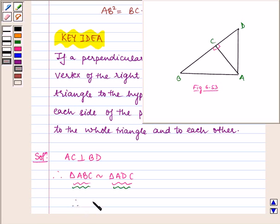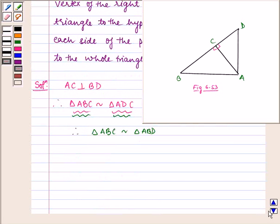Therefore triangle ABC is similar to triangle ABD, and also triangle ADC is similar to triangle ABD.